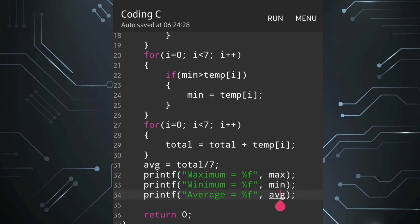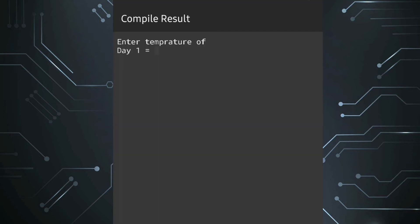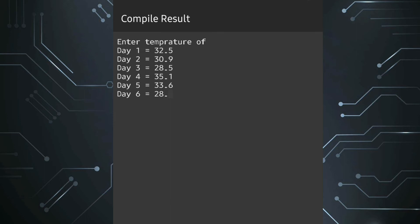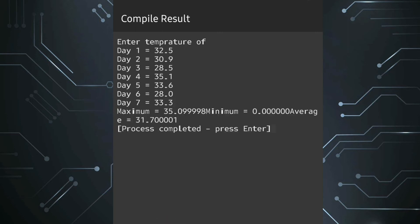Let's run the program. It's asking to enter the temperature: Day 1: 32.5, Day 2: 30.9, Day 3: 28.5, Day 4: 35.1, Day 5: 33.6, Day 6: 28.0, Day 7: 33.2. The output shows maximum is 35, but minimum is 0, which is incorrect.